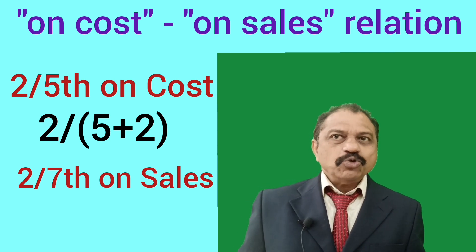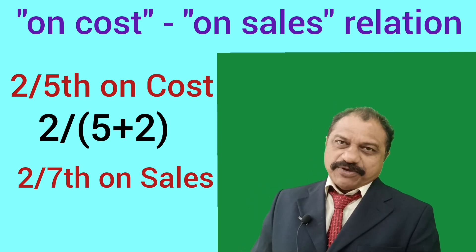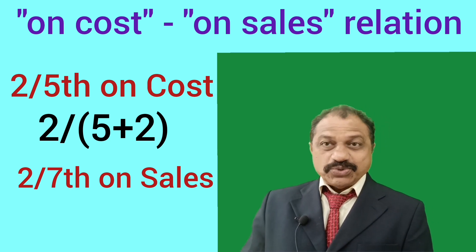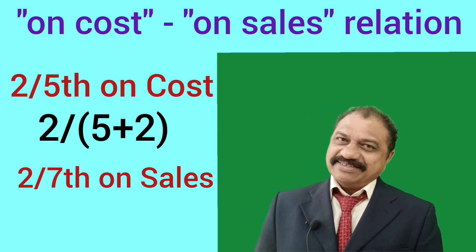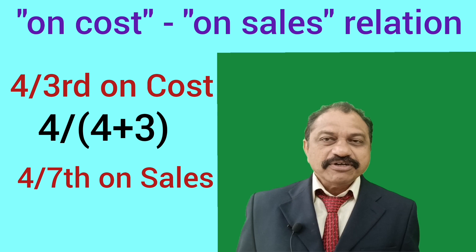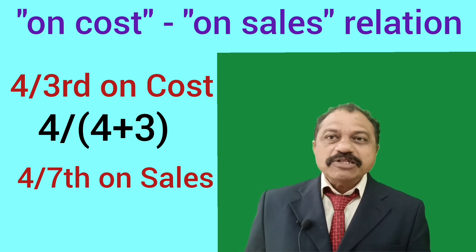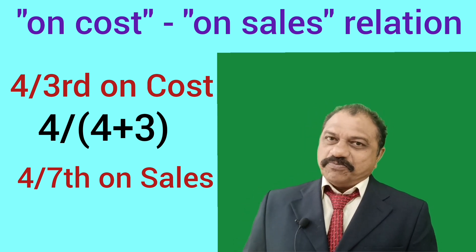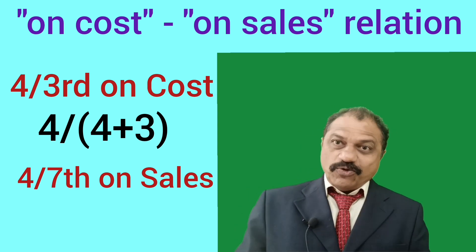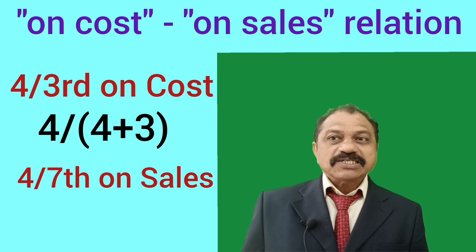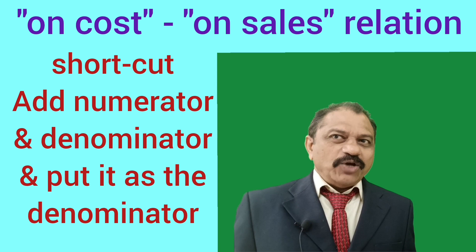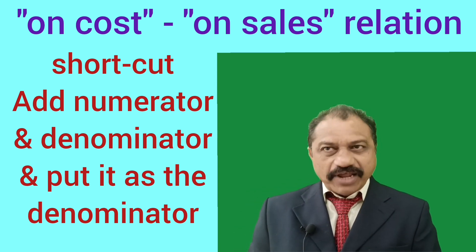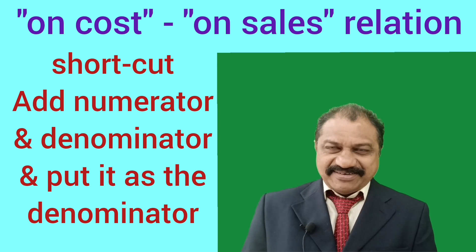Example 3: Rate of profit is 2/5 on cost. So 2/5 on cost equals 2 by (5+2) on sales, that is 2/7 on sales. Example 4: Rate of profit is 4/3 on cost. So 4/3 on cost equals 4 by (3+4) on sales, that is 4/7 on sales. Therefore, whenever you get the rate of profit as a fraction on cost, apply the trick to calculate the rate of profit on sales.